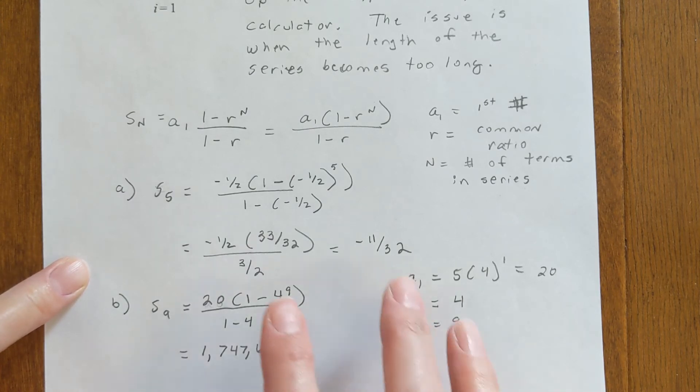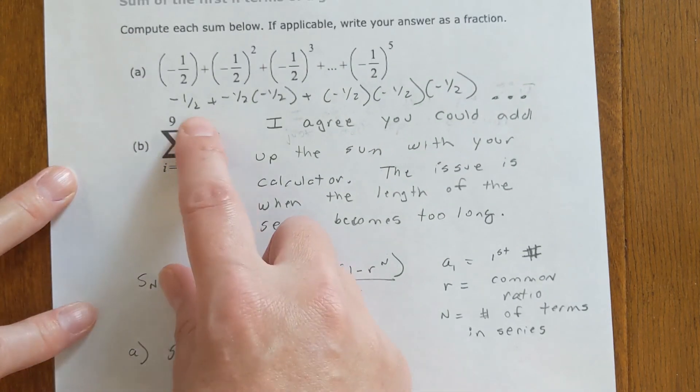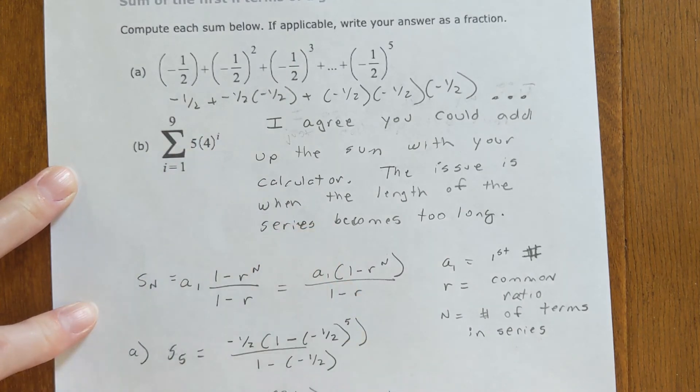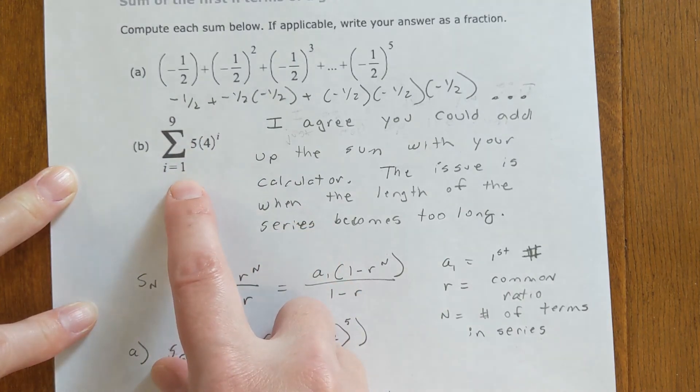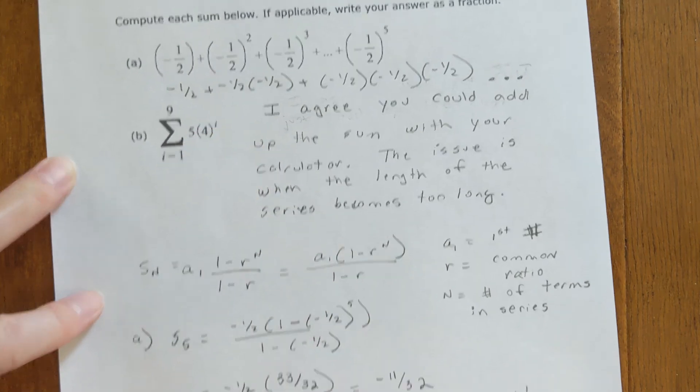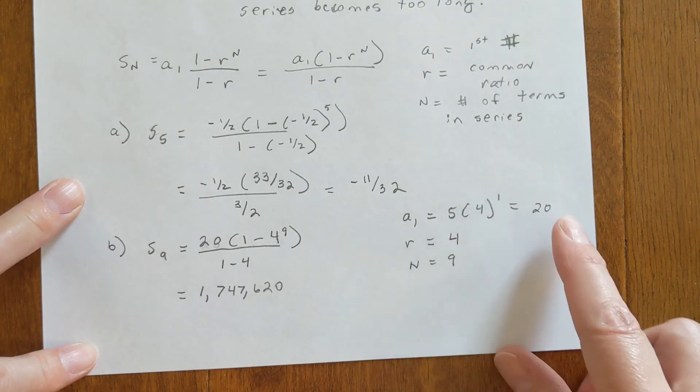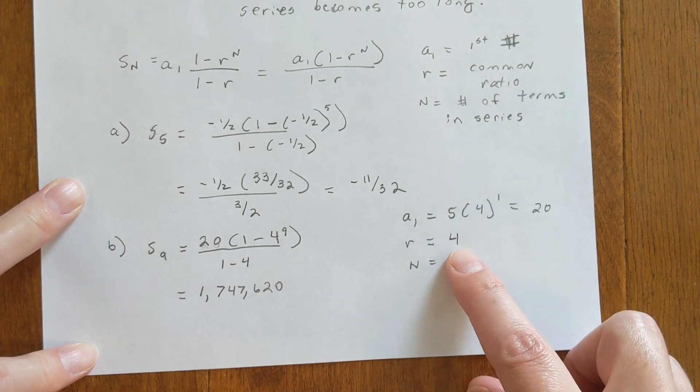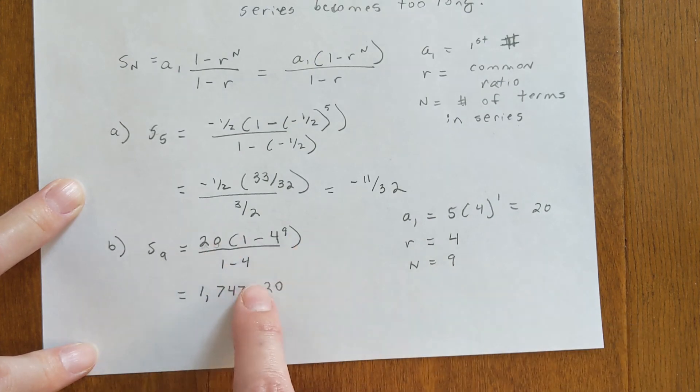The second one on letter B has this sigma symbol, which means we're finding the sum of the first term through the ninth term. The first term, plugging in 1, is 5 times 4 to the first, which gives you 20. The common ratio is 4, and there are 9 terms in the list.